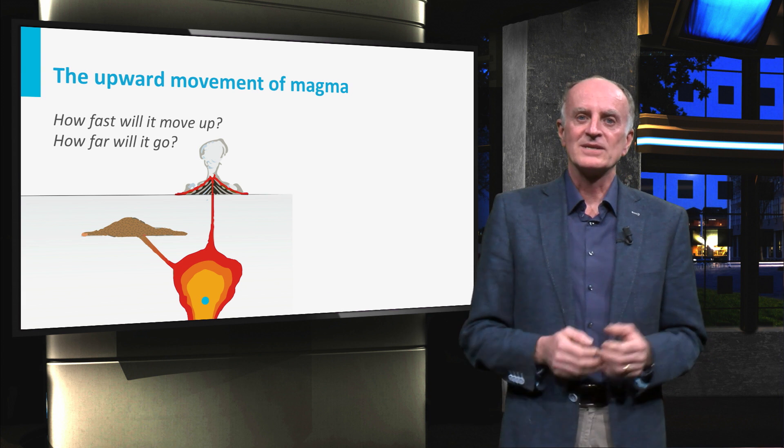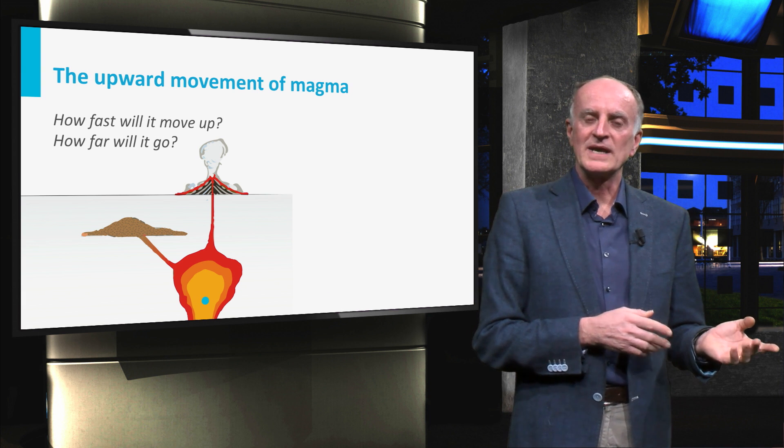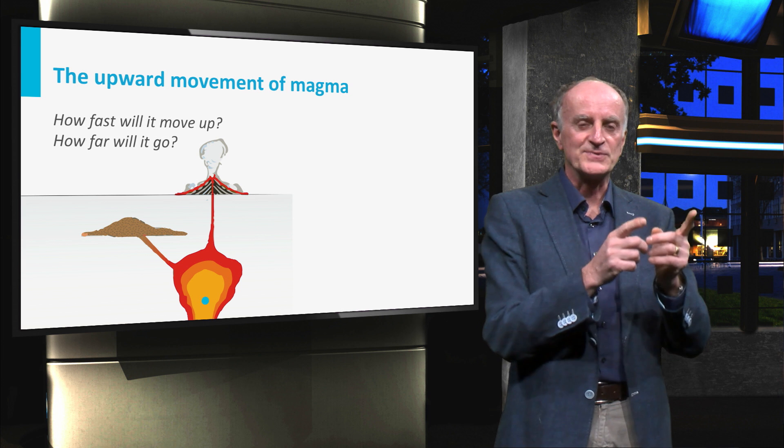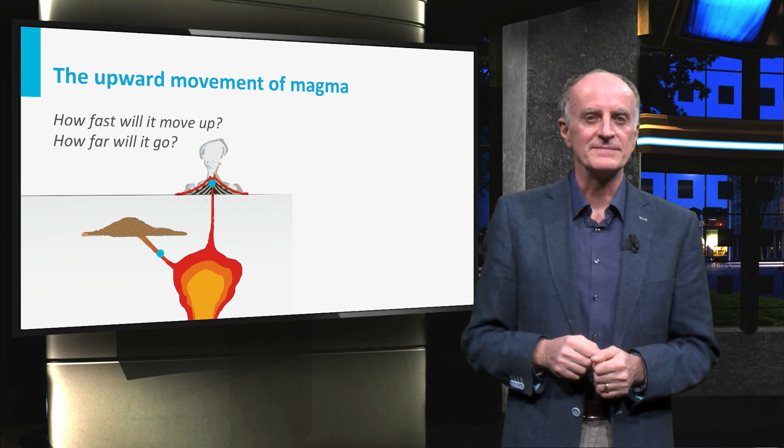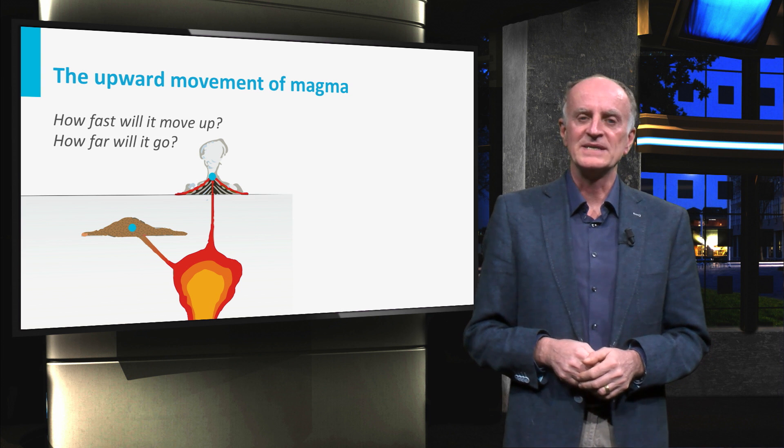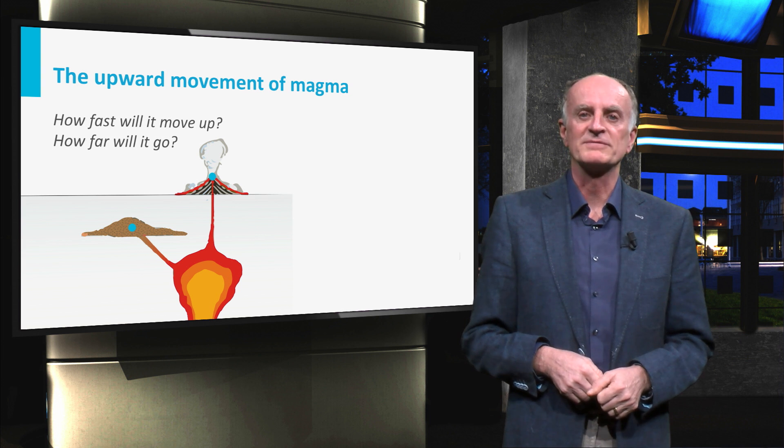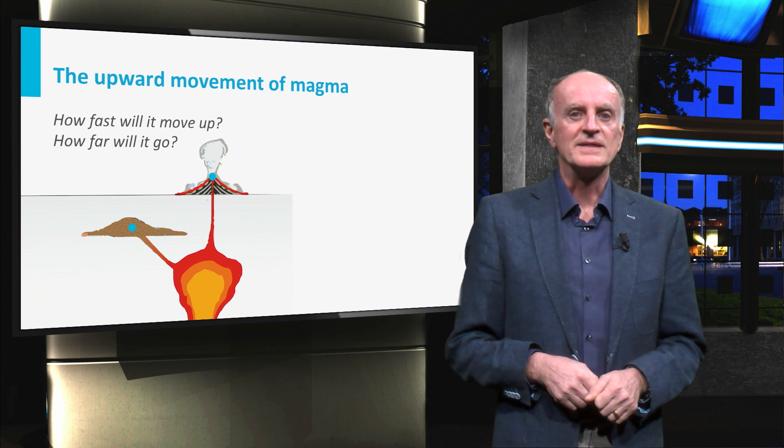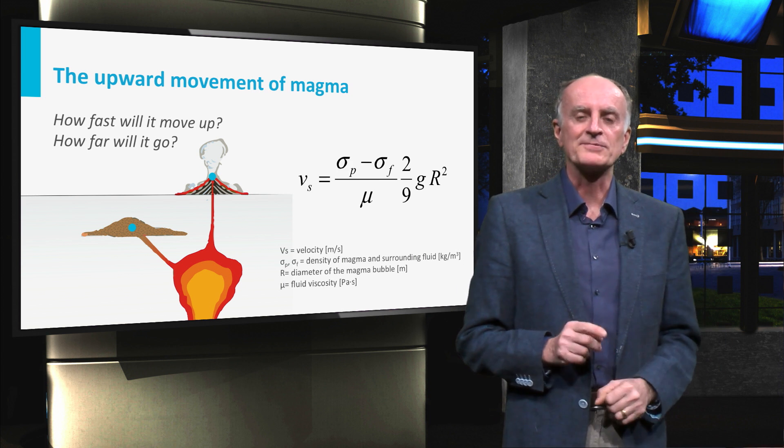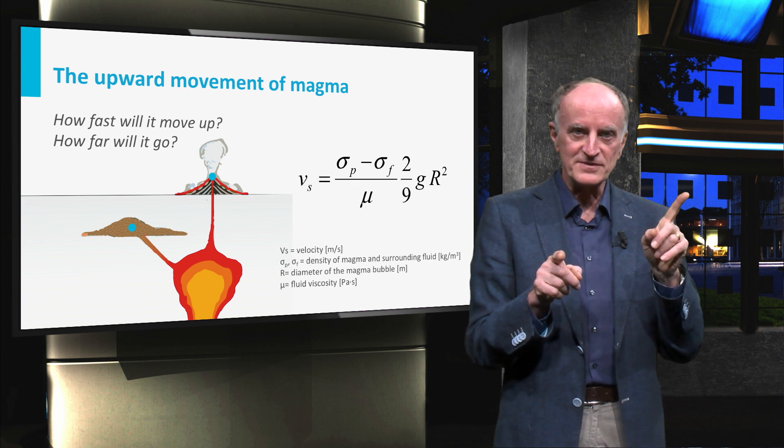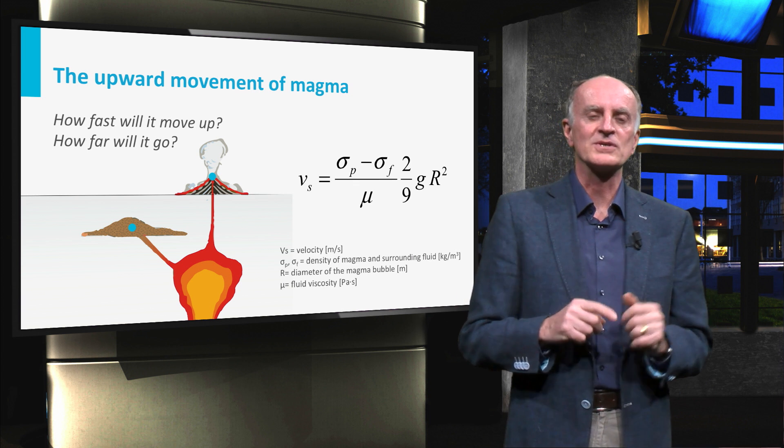The magma has a density lower than that of the surrounding rock and will start moving upward, driven by the negative density difference. We call this buoyancy. A simplistic but interesting quantitative description is provided by Stokes law. This shows that the velocity of the rising magma bubble is directly proportional to the density difference and inversely proportional to the viscosity.